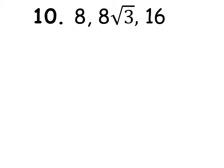We need to know which of these is the longest, so we know which one is the hypotenuse. 8 times the square root of 3 is less than 8 times the square root of 4, which is the same as 8 times 2, which would be 16. So 16 is the biggest number.